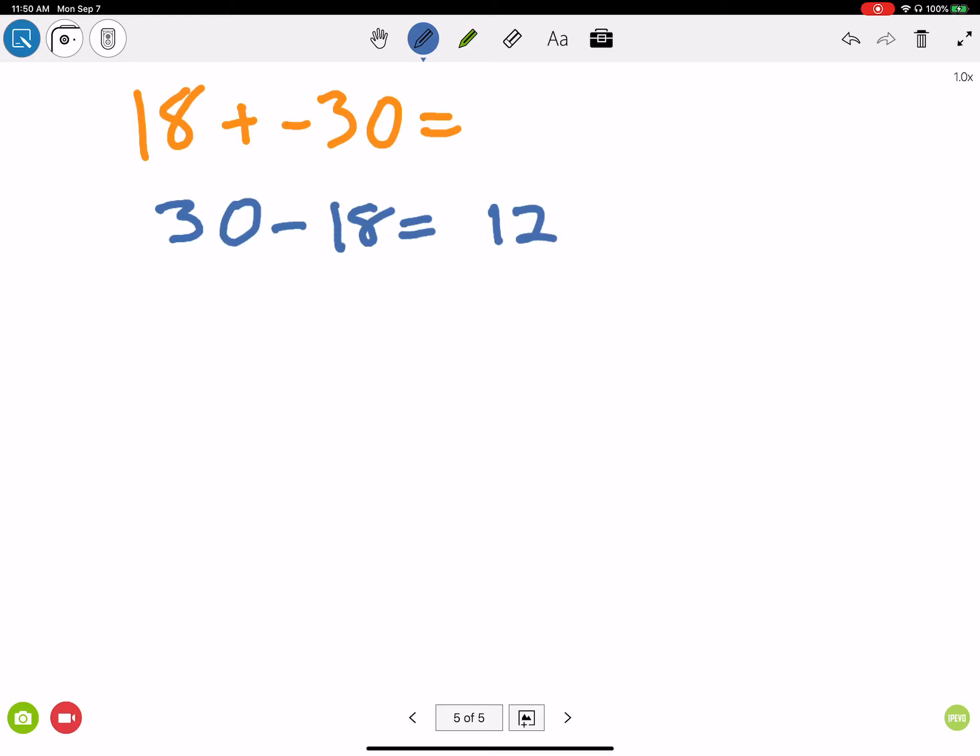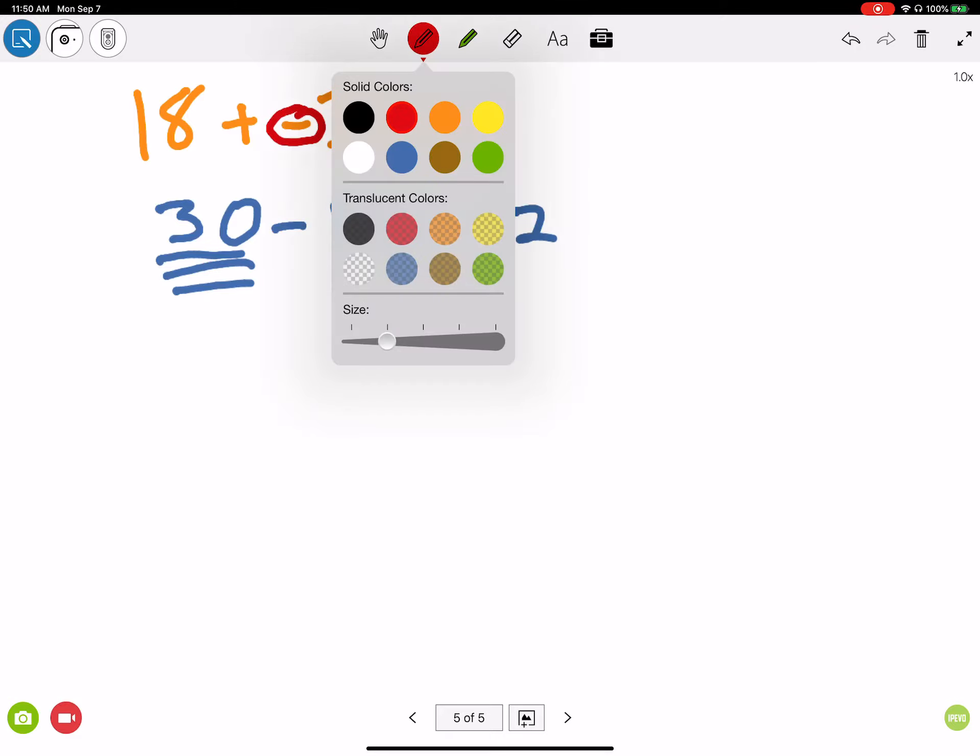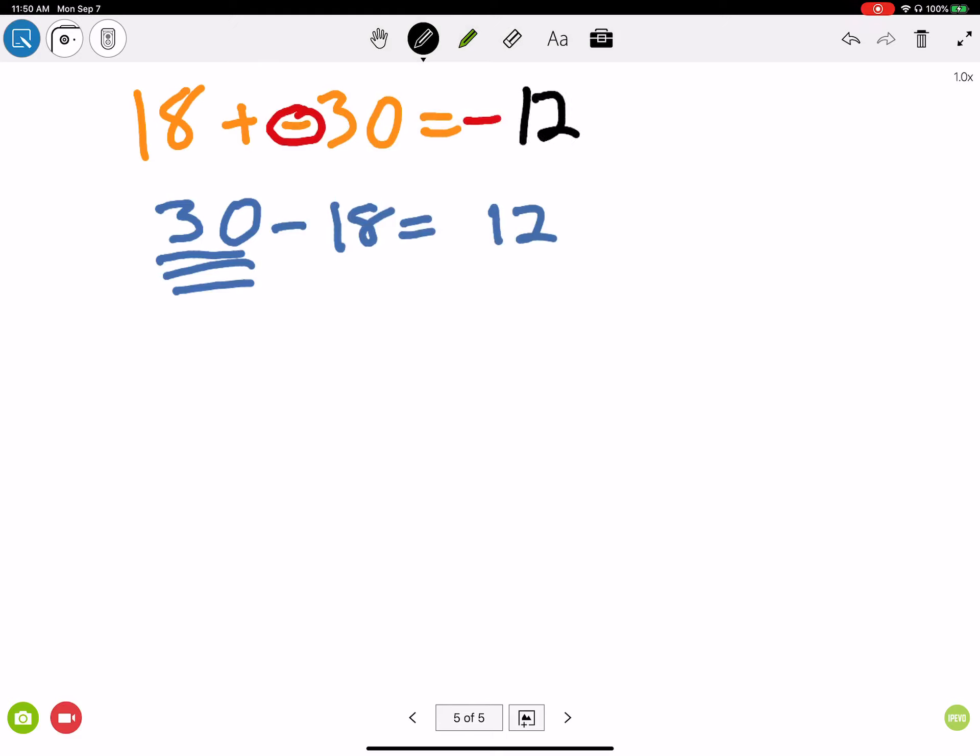I said subtract the bigger number by the smaller number. Well, 30 minus 18 is 12, but 30 was the bigger number, and 30 originally was negative, so my answer has to be a negative number, which is negative 12.